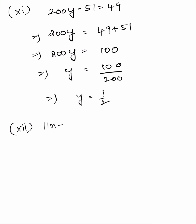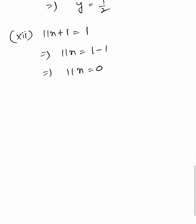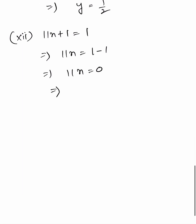Twelfth: 11n plus 1 equals 1, so 11n equals 1 minus 1, giving 11n equals 0, and therefore n equals 0 divided by 11, which equals 0.